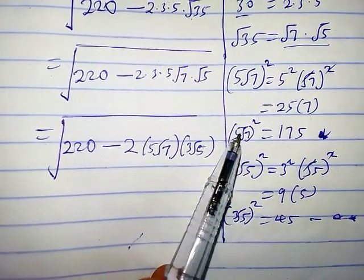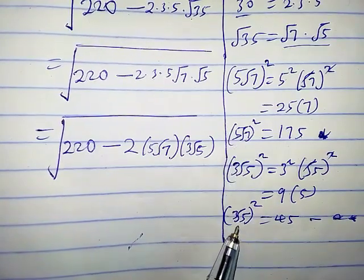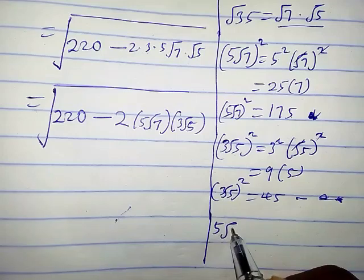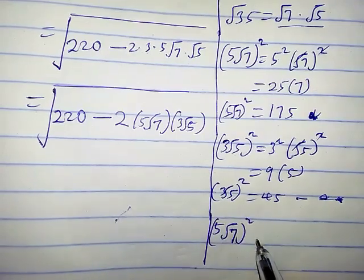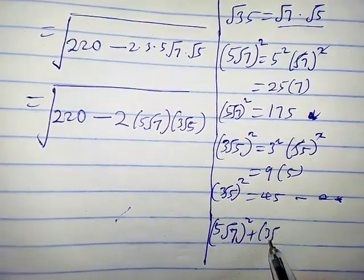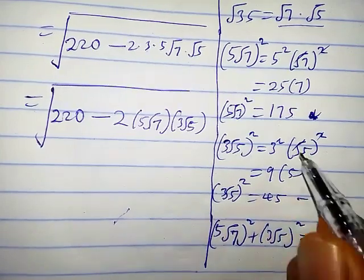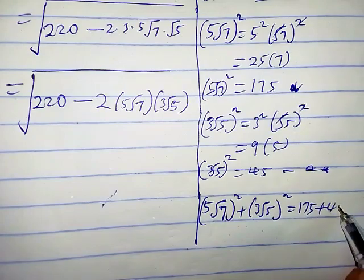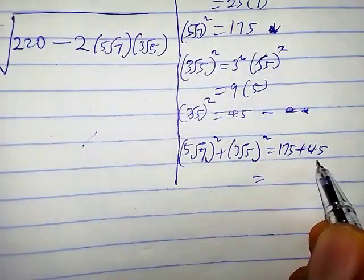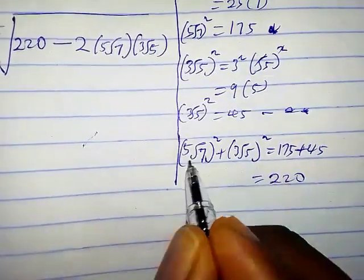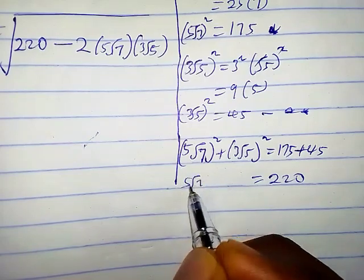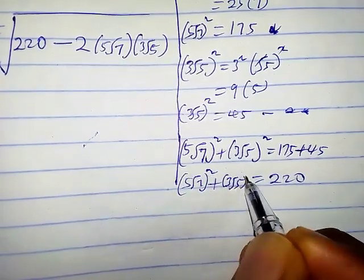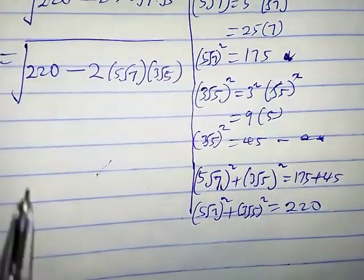Now let's add star and star star together. We have (5√7)² plus (3√5)² equals 175 plus 45, which equals 220. So (5√7)² plus (3√5)² equals 220.